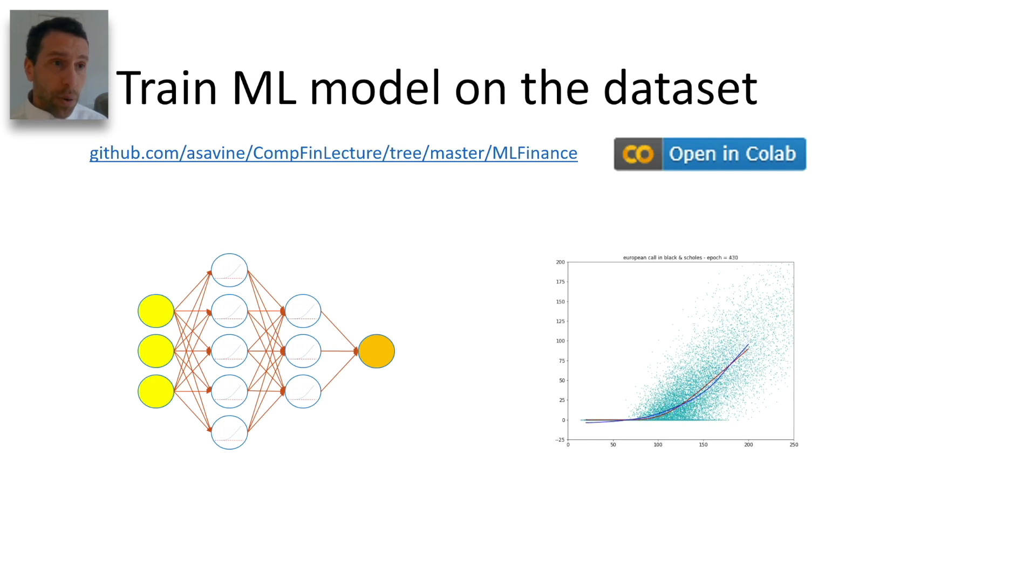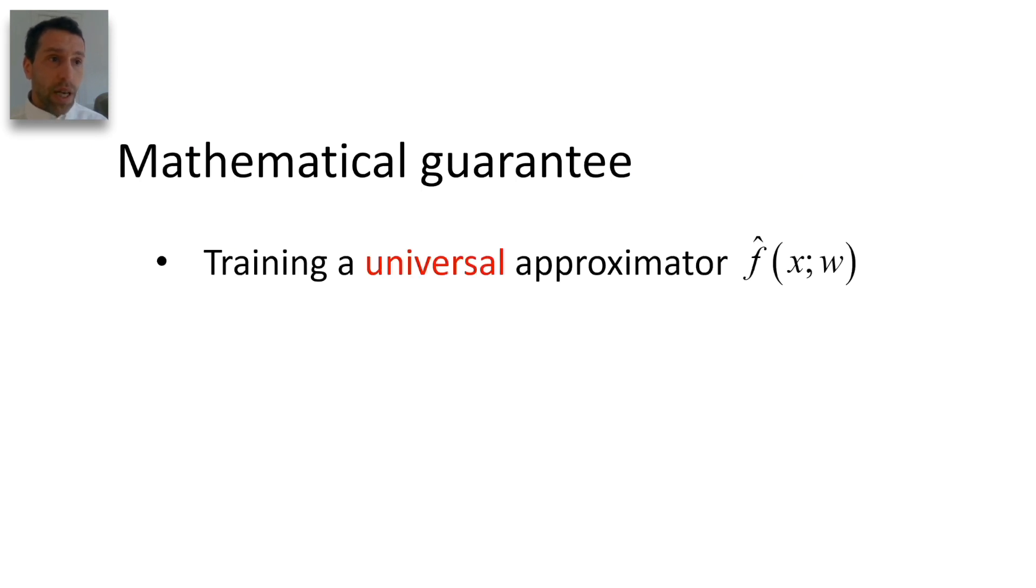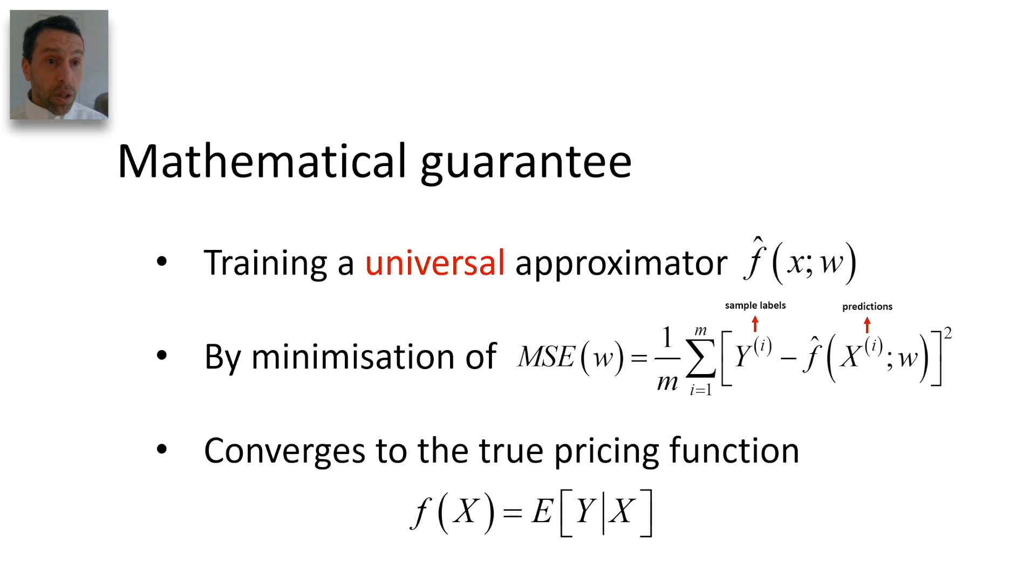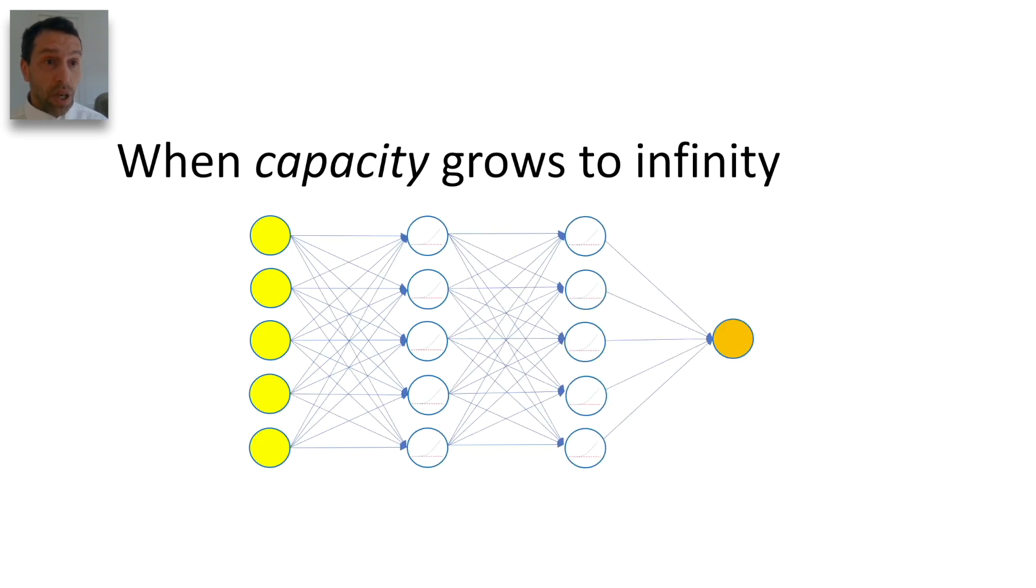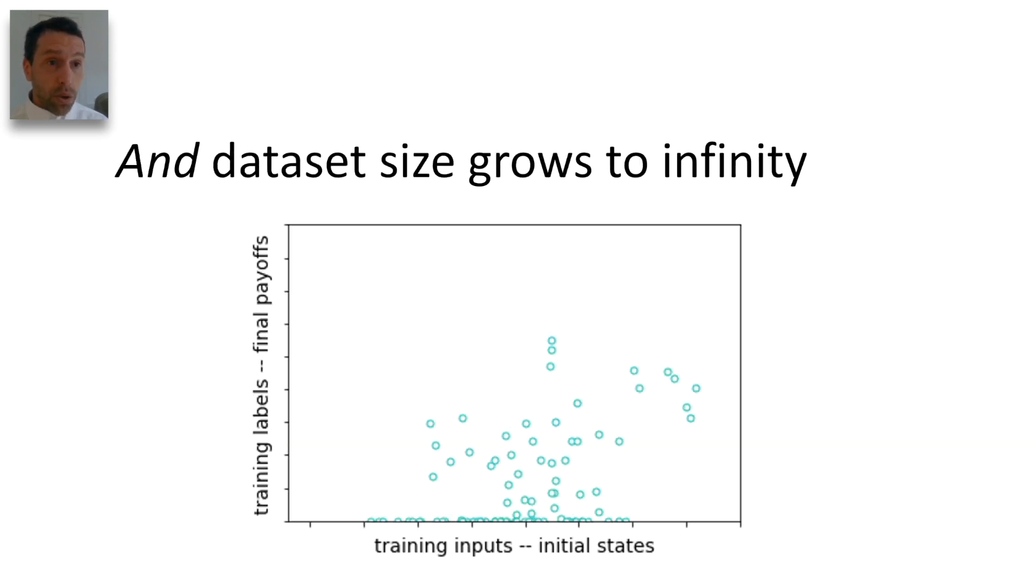We have a mathematical guarantee that a universal approximator, like a neural network, trained by minimization of the mean squared error between these labels and the predictions of the network, converges to the correct pricing function, which is the conditional expectation of the payoff. That is, when both the capacity of the approximator and the size of the training set grow to infinity.